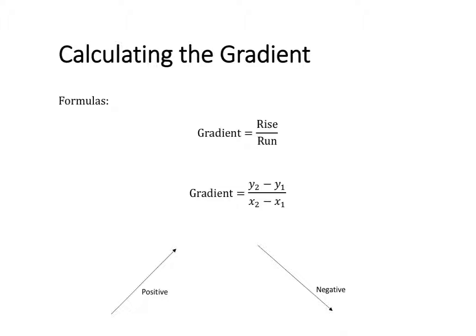When we're calculating the gradient, we are calculating the slope of a line. When the line is sloping upwards, then the gradient is going to be positive, and the value of the gradient will be a positive number. But when the line is sloping downwards, then the gradient is going to be negative, and our value of the gradient will be a negative number.